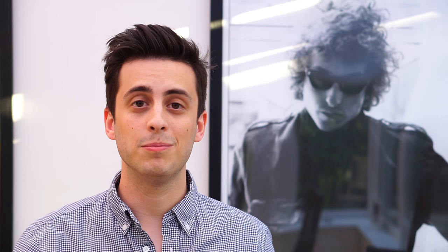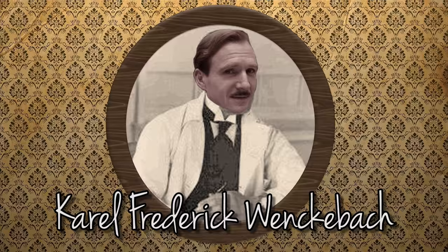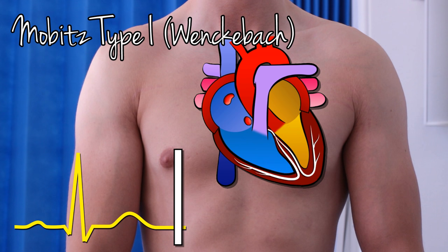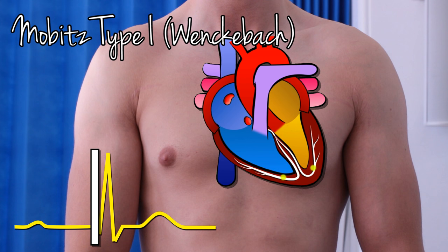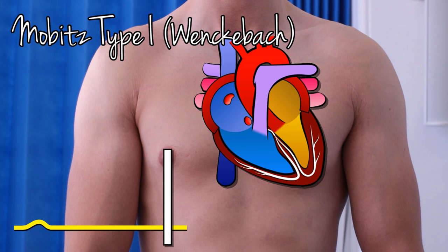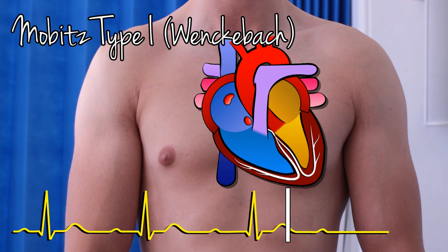You may have heard of Mobitz Type 1 and Type 2, named after a guy called Woldemar Mobitz. Mobitz Type 1 is also known as the Wenckebach rhythm. Mobitz Type 1, the Wenckebach rhythm, involves an increasing distance between P-waves and QRS complexes — an increasing PR interval — until eventually a QRS complex is dropped. Think: the impulse is really trying to make it through, but it gets more and more difficult and eventually one doesn't make it.